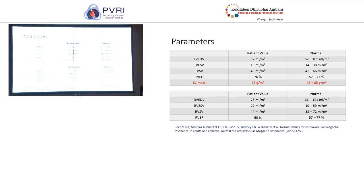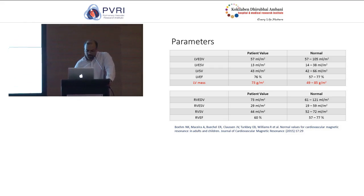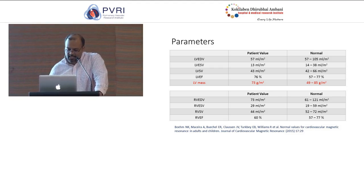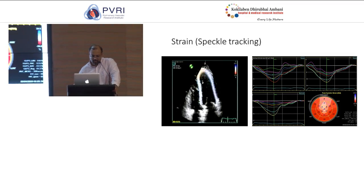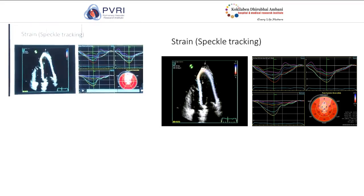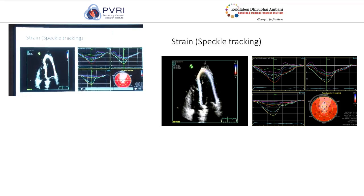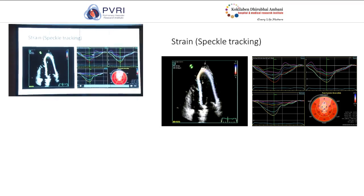Myocardial tagging — equivalent to speckle tracking strain on echo — showed decreased intrinsic contractility at the LV apex. Chamber volumes showed that left ventricular and right ventricular volumes were normal per cardiovascular MRI reference values. LV mass was 73 g/m², which is normal. Speckle tracking echo strain bullseye plot showed segment 17 (the apex region) with less strain around minus 4 to minus 6, while basal and mid segments had normal strain.